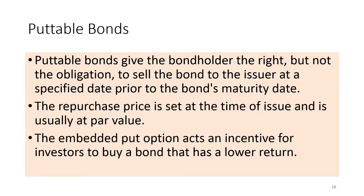A putable bond is a debt instrument with an embedded put option. Putable bonds are directly opposite to callable bonds. Putable bonds give the bondholder the right but not the obligation to sell the bond to the issuer at a specified date prior to the bond's maturity date. This means the issuer has to redeem the bond before its maturity date when the bondholders demand early repayment of the principal. The repurchase price is set at the time of issuance and is usually at par value. The embedded put option acts as an incentive for investors to buy a bond that has a lower return. The put option on the bond can be exercised upon the occurrence of specified events or conditions or at a certain time.